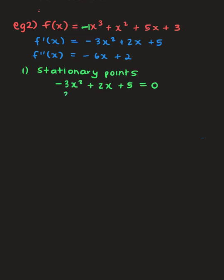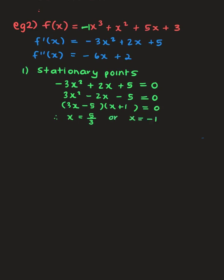For stationary points we let the first derivative equal zero: -3x² + 2x + 5 = 0. Factorizing gives x = 5/3 or x = -1. To find the corresponding y-values, we plug these back into the original equation: f(5/3) = 256/27, and f(-1) = 0. Don't doubt yourself with fractions like 256/27 — that is the correct answer.